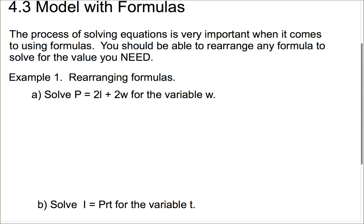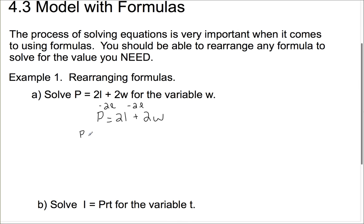Looking at this first one, we're going to rearrange this formula. Solve P equals 2L plus 2W for the variable W. I hope you can recognize this as the perimeter for any rectangle. We want to get W by itself. So we've got P equals 2L plus 2W. The first thing we want to do is get the 2W completely by itself first, so I'm going to get rid of this 2L by subtracting 2L on both sides of the equation. So now we have P subtract 2L equals 2W.